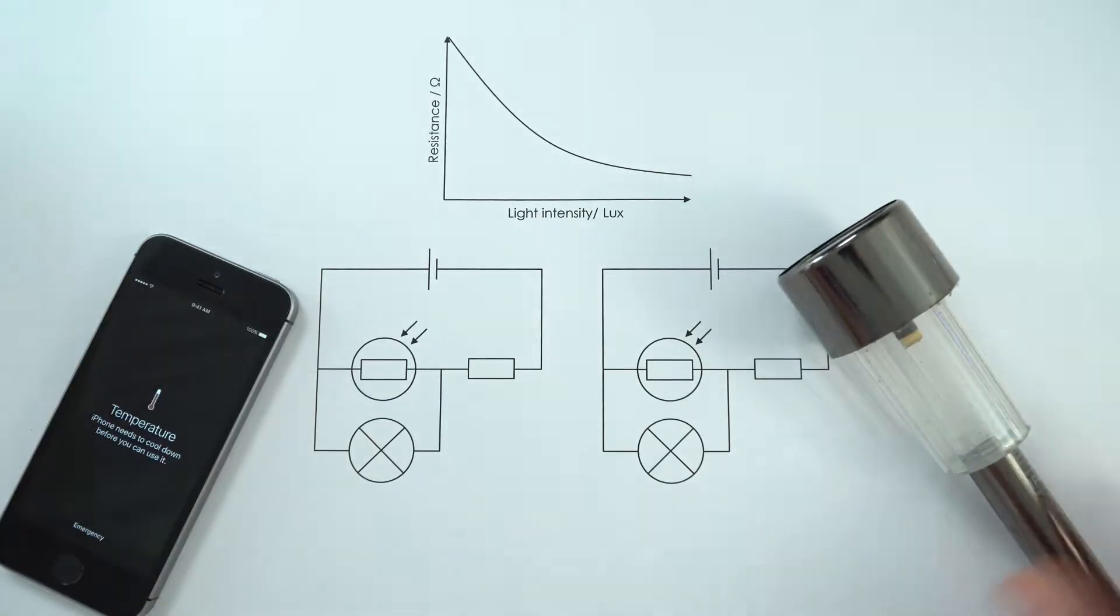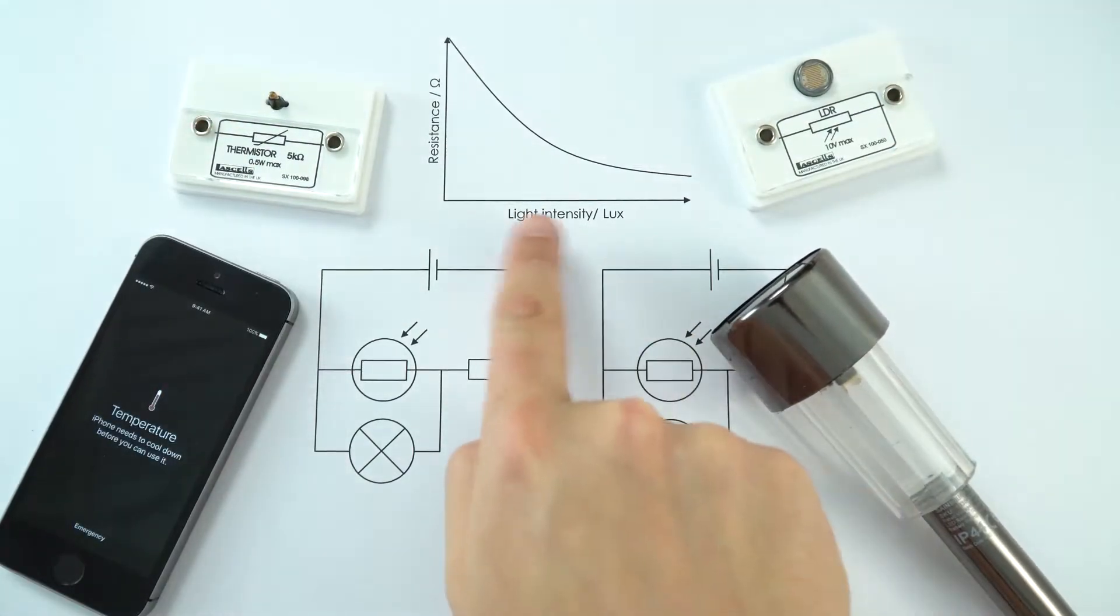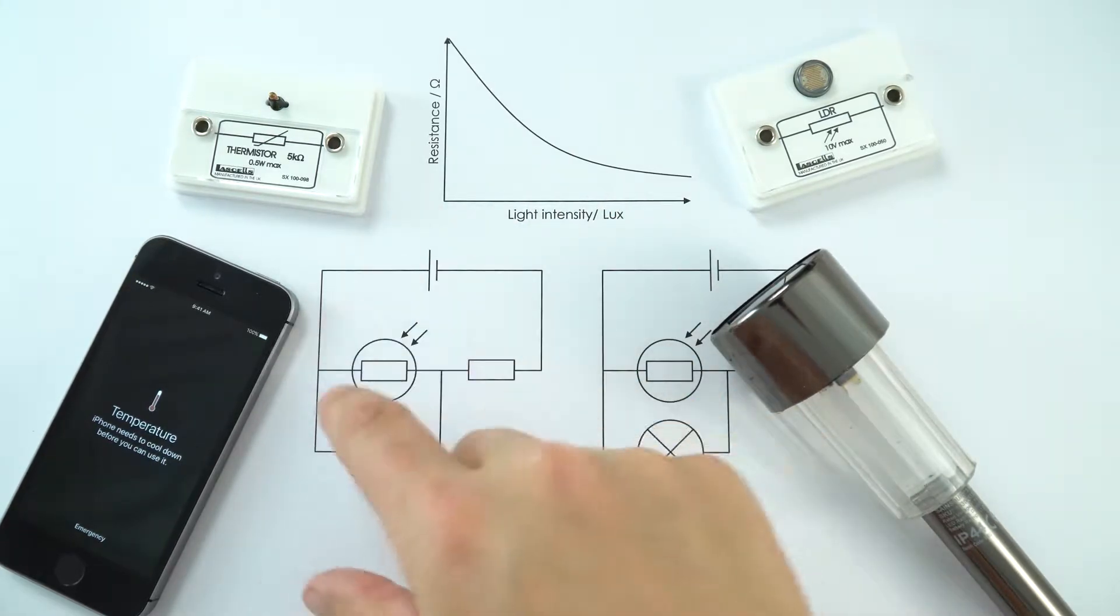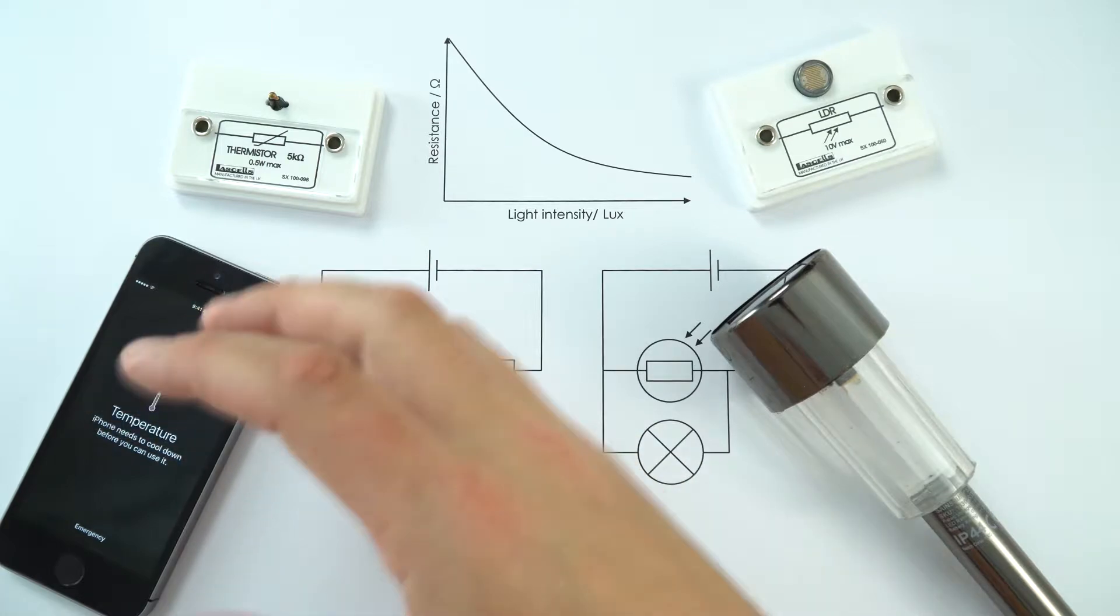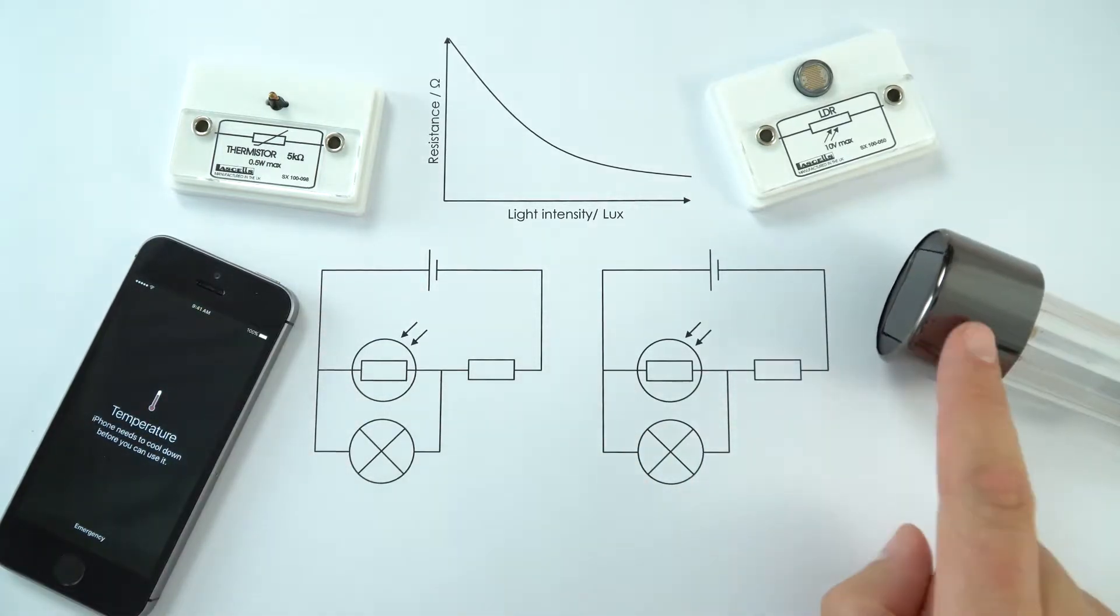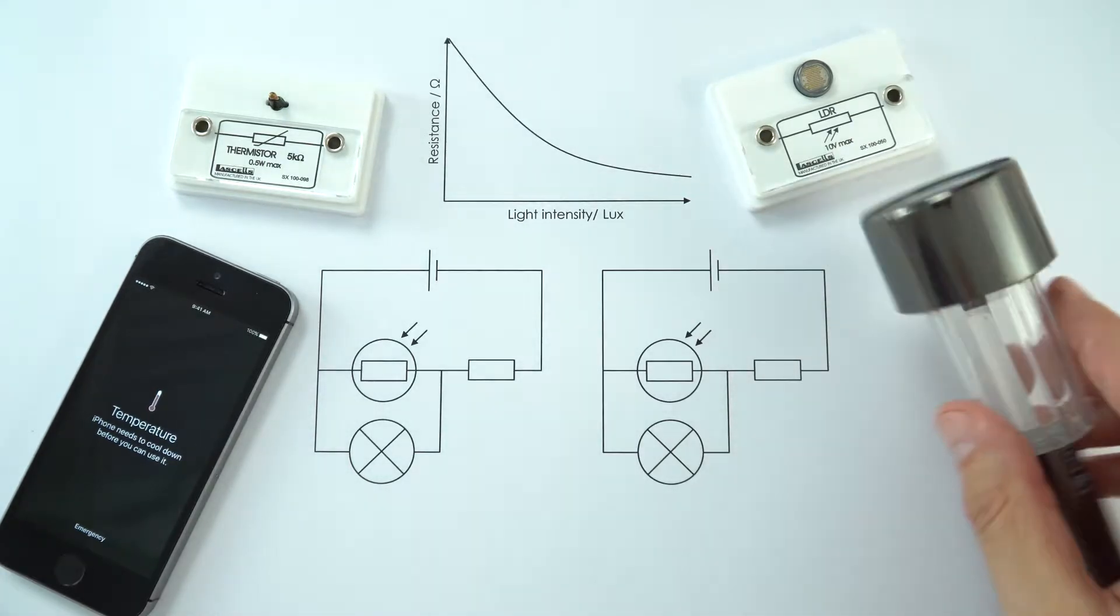Well, it's because of the thermistors and LDRs which are in the circuits. Now these change their resistance depending on the outside conditions, and then we can use that in combination with a few other things to actually get the circuit doing what we want. In this scenario, we're going to look at what happens where you maybe have a light that you want to turn on when it gets dark.